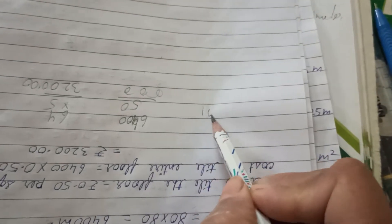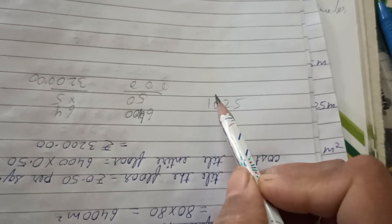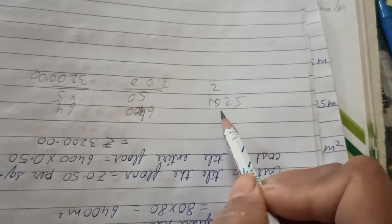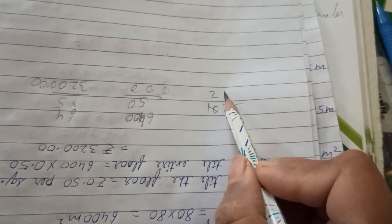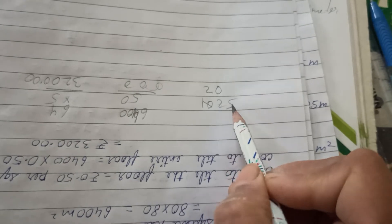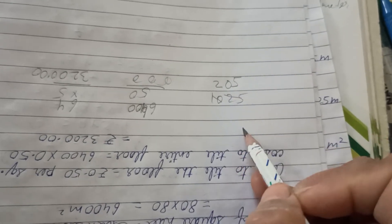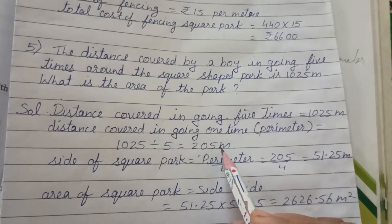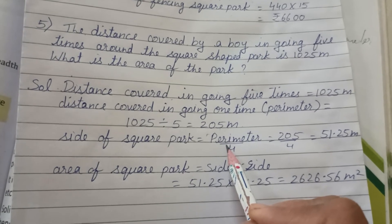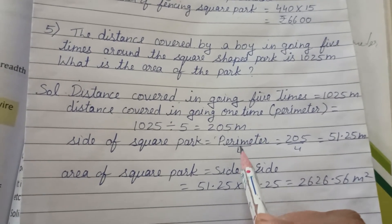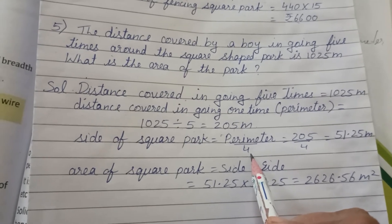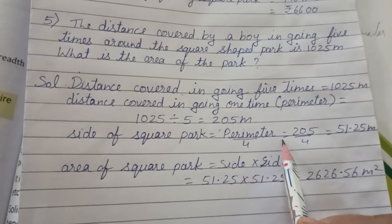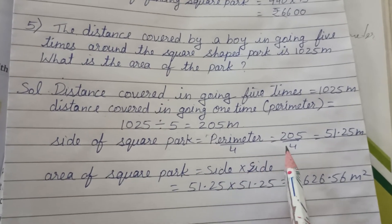Shortcut divide: 1025 ÷ 5. First digit 1: 1 is not divisible by 5, so take two digits — 10 ÷ 5 = 2. Then 2 ÷ 5: not divisible, so write 0. Then 25 ÷ 5 = 5. So perimeter = 205 meters. Now perimeter is equal to 4 × side, so side = perimeter ÷ 4.